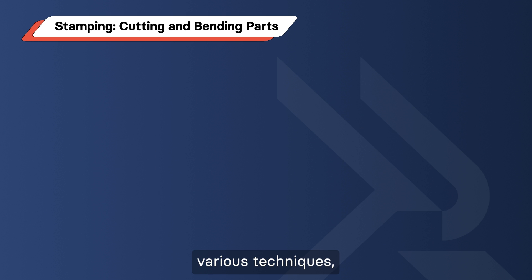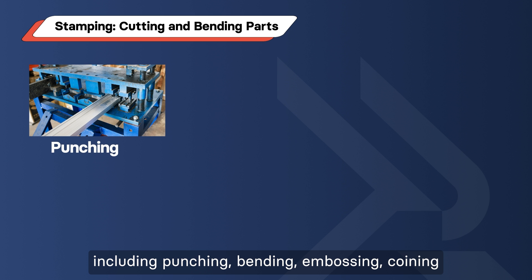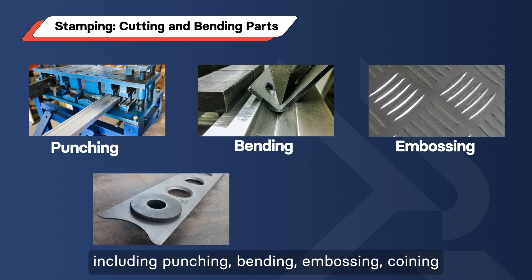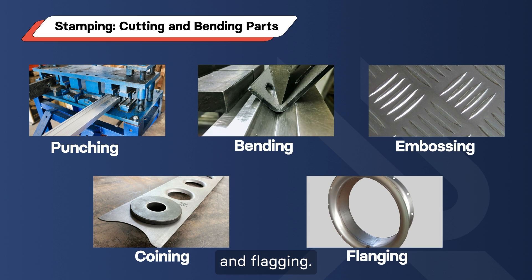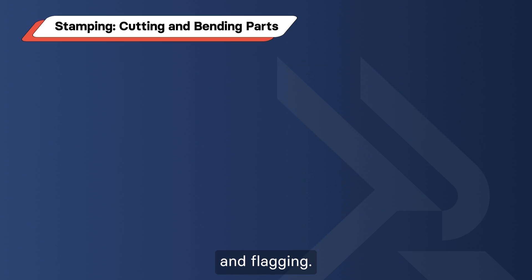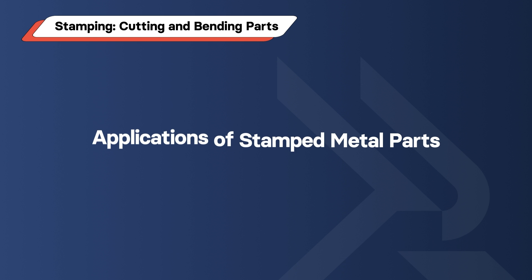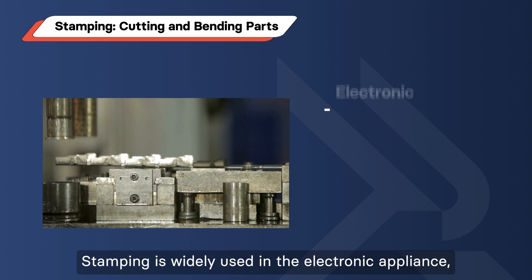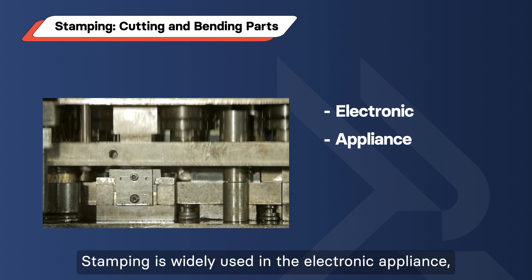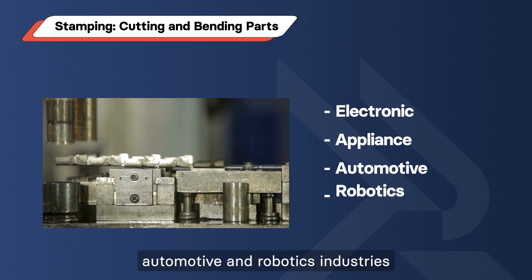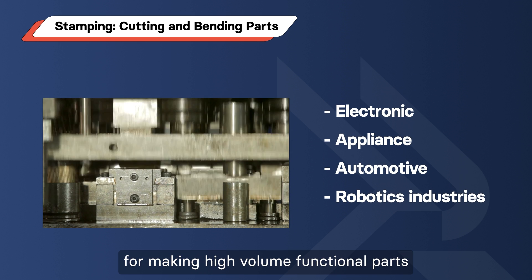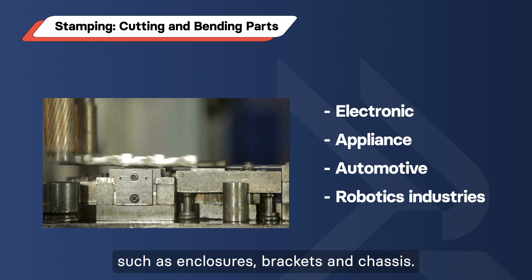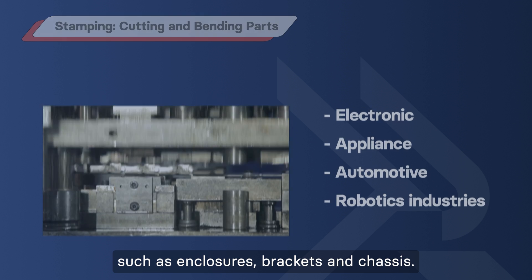Stamping involves various techniques, including punching, bending, embossing, coining, and flagging. Applications of Stamped Metal Parts: Stamping is widely used in the electronic, appliance, automotive, and robotics industries for making high-volume functional parts such as enclosures, brackets, and chassis.